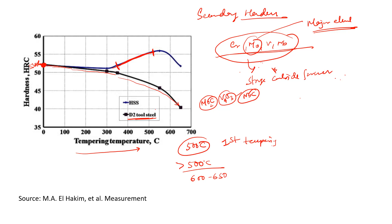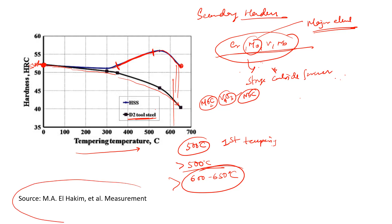The second tempering is generally done at 600 to 650°C. When we do the second tempering at this higher temperature, we see a decrease in hardness again, meaning the material becomes tougher. We finish the tempering around 620–640°C depending on the type of steel, and up to 650°C for high speed steel.